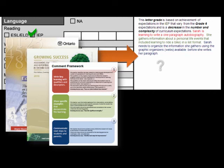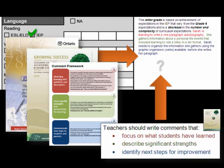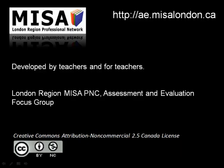This process, using the comment framework, included the key principles linking education and learning for all with Growing Success in order to report achievement for a student with special learning needs. This comment provides personalized, clear, precise, and meaningful feedback for this student. Additional resources, including a copy of the comment framework and examples of specific comments for various divisions, can be found at ae.misalondon.ca.